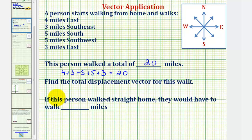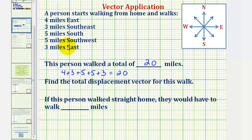For the second question, we want to find the total displacement vector for this walk. To do this, we'll write each part of the walk as a vector, and then find the sum of the five vectors to find the total displacement vector. For the last question, if this person walks straight home, they would have to walk how many miles — this would be the magnitude of the resultant or total displacement vector. So for these next two questions, we'll write each part of this walk as a vector in component form.